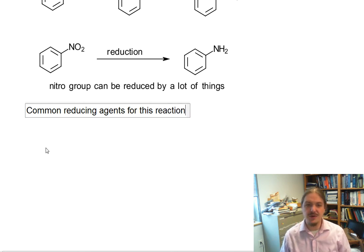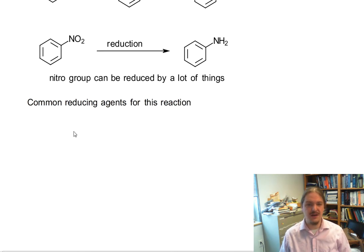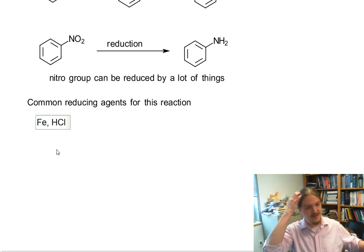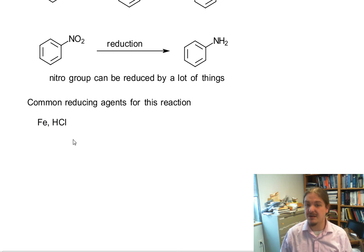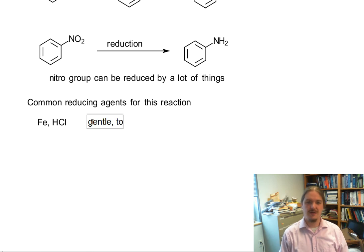Let's first of all talk about common reducing agents for this reaction. Among the most common reducing agents for this reaction is iron metal and hydrochloric acid. This combination of iron and hydrochloric acid is good, gentle, and it tolerates other functional groups.